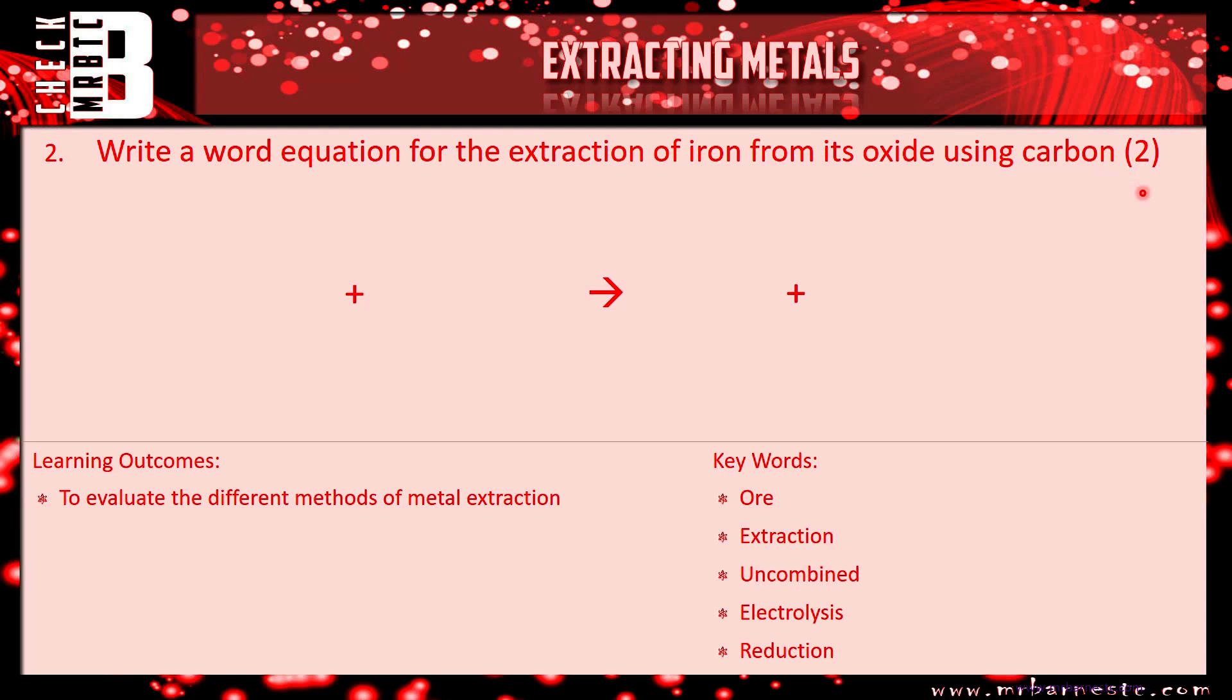If we move on to question two, write the word equation for the extraction of iron from its oxide using carbon. The oxide is just called iron oxide. So, iron oxide plus carbon, which gets you your first mark, produces iron, which is your metal, and then the gas that's always given off is carbon dioxide. One mark for your products.